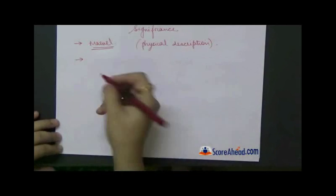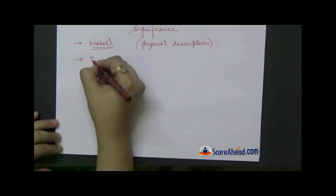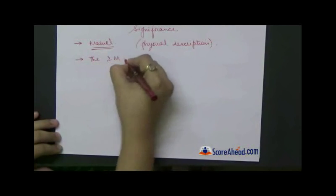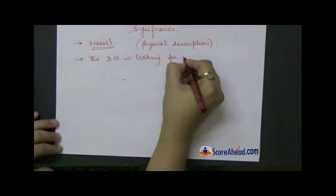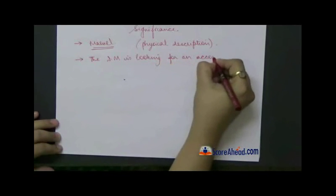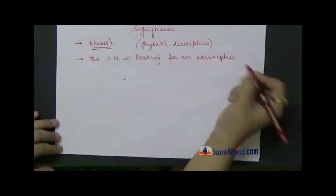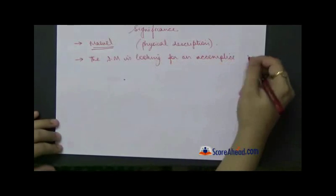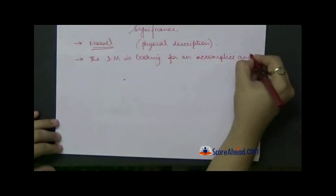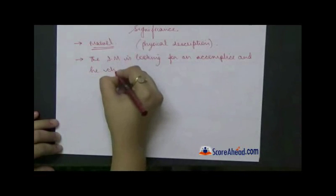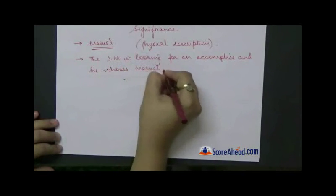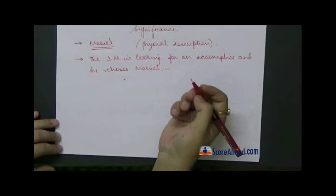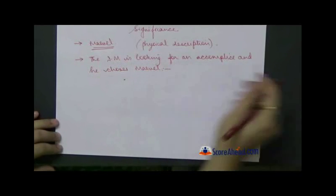The invisible man is looking for an accomplice. So now he cannot do things by himself, he is looking for an accomplice. And for this reason he chooses Marvel. And if you ask me why he chooses Marvel and nobody else, there could easily be three reasons for this.